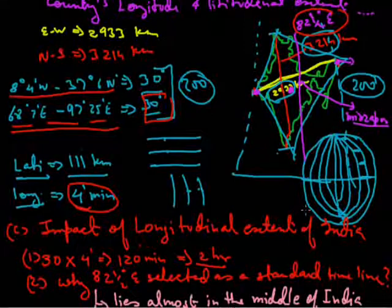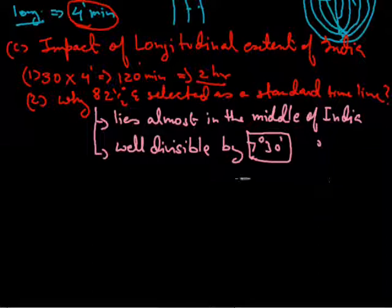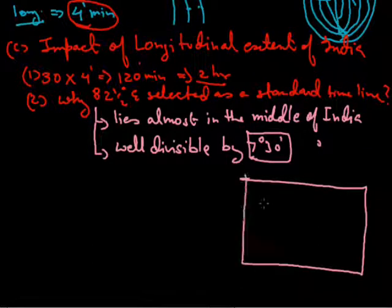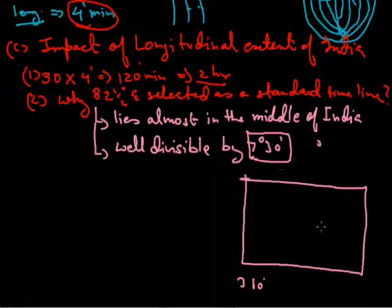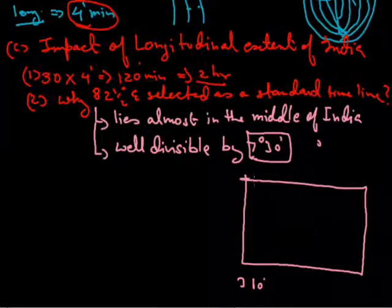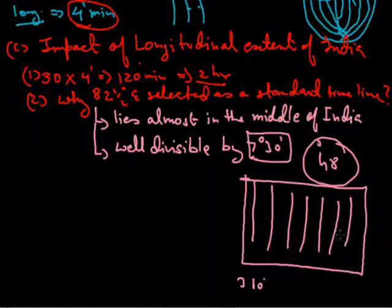The reason for divisibility by 7 degrees 30 minutes is a world standard. There are 360 longitudinal lines in the world, and dividing by 7.5 degrees gives 48 fixed time zones worldwide. Every country must choose the nearest of these 48 fixed lines as its standard meridian, and each zone differs by half an hour from the next.